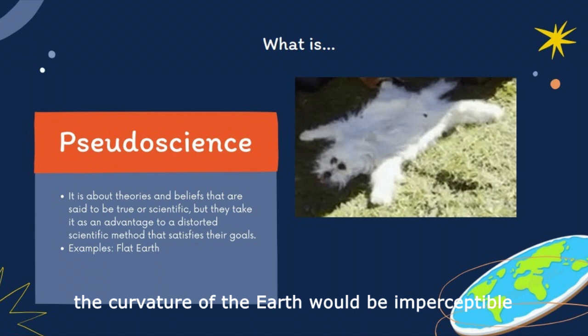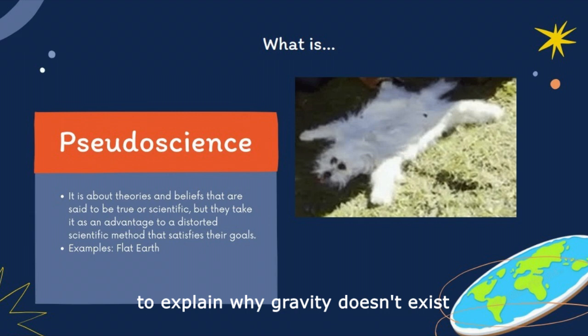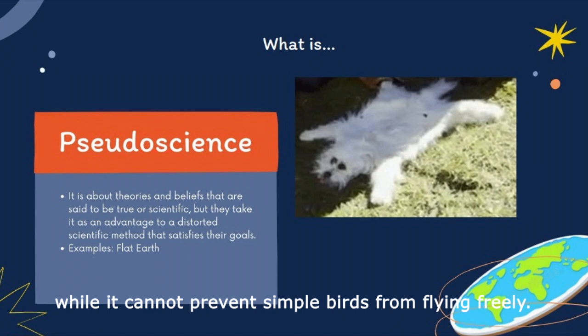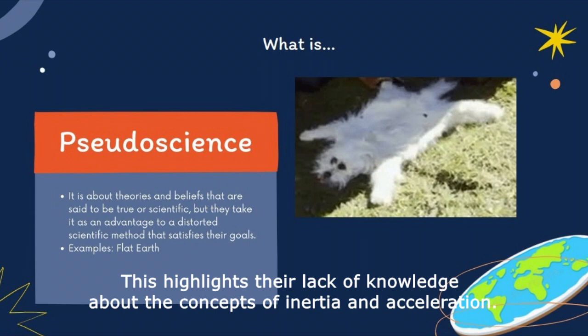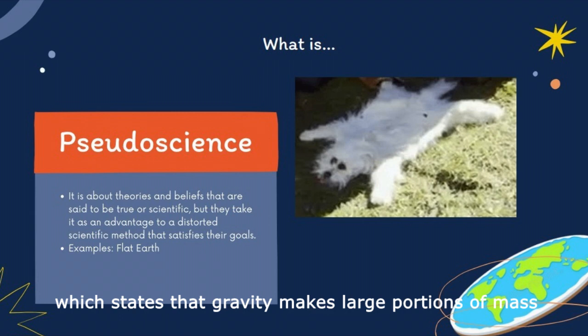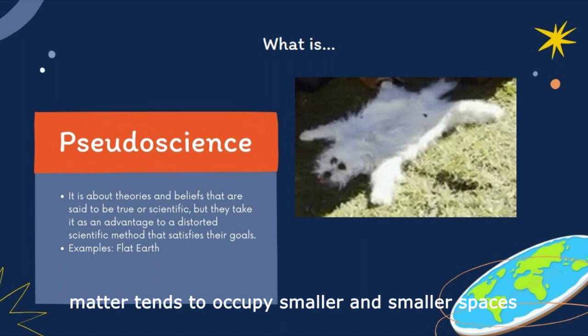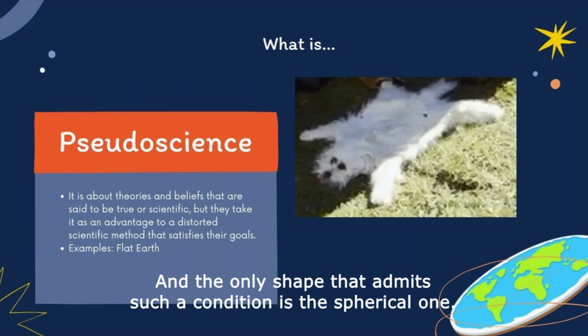It's just as if you were a flea: not seeing the curvature of a dog, you'd conclude that the dog is flat. To explain why gravity doesn't exist, flat Earthers ask how it is strong enough to keep buildings on the ground while it cannot prevent simple bodies from flying freely. This highlights their lack of knowledge about the concepts of inertia and acceleration. There are many studies which contradict these ideas, among them Newton's theory of universal gravitation, which states that gravity makes large portions of mass attract each other equally in all directions. In this way, matter tends to occupy smaller and smaller spaces, and the only shape that admits such a condition is the spherical one.